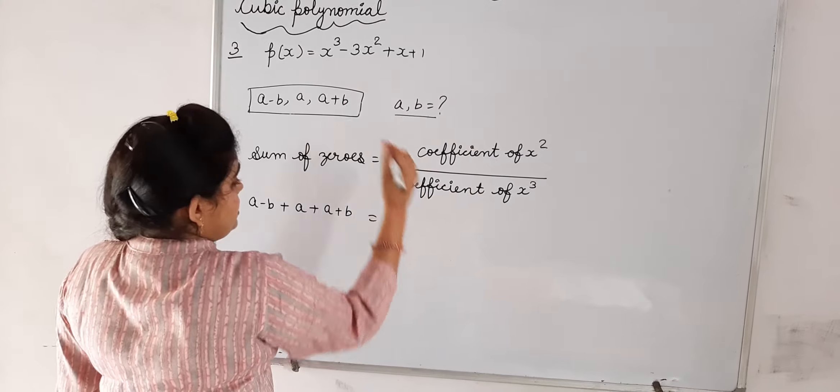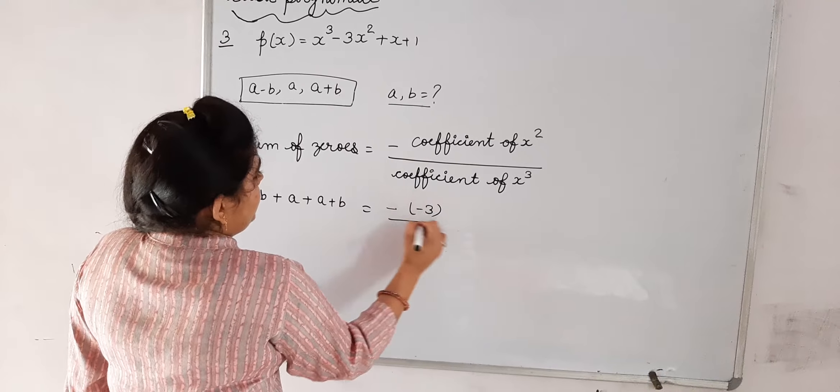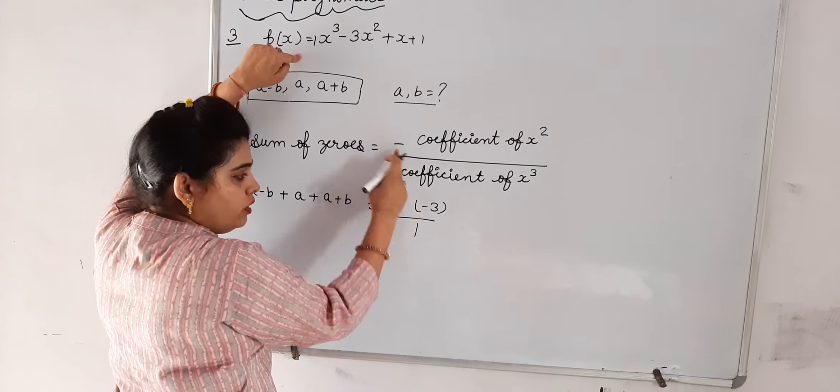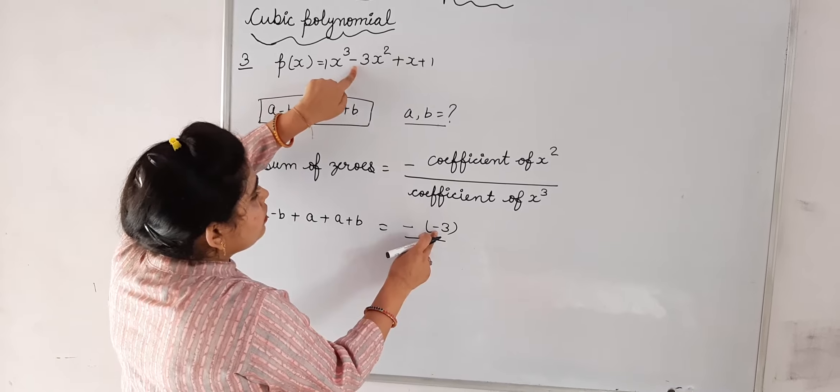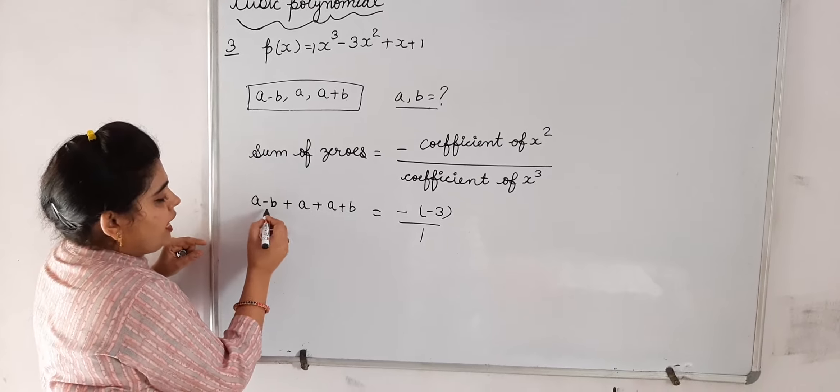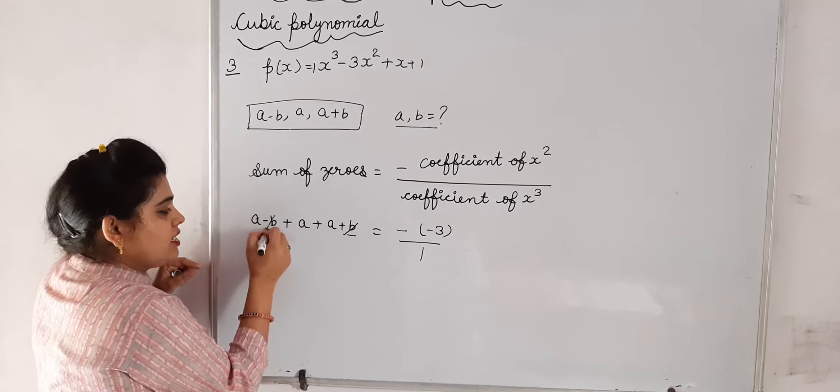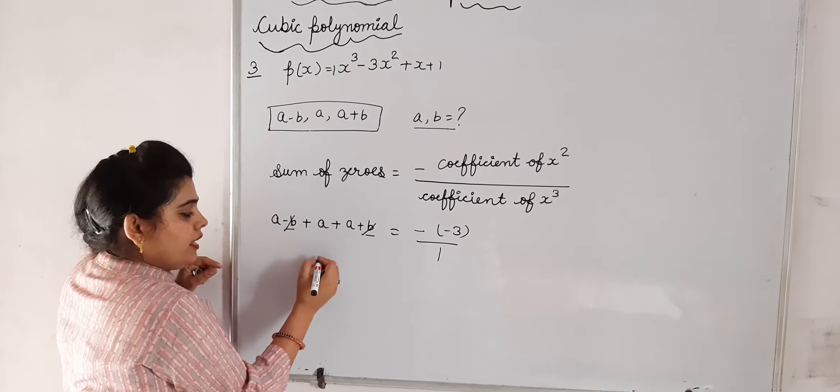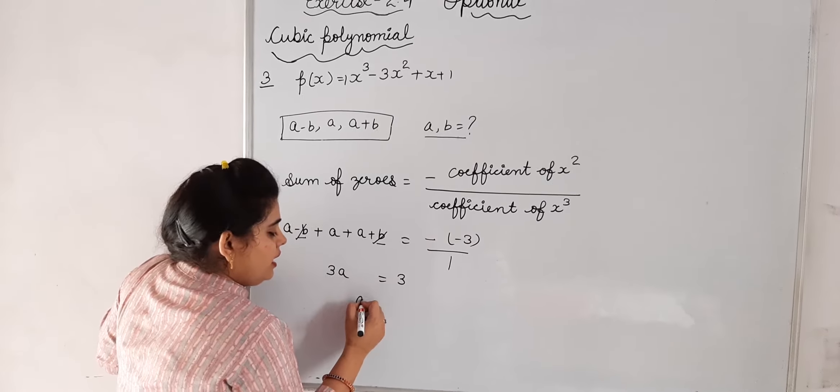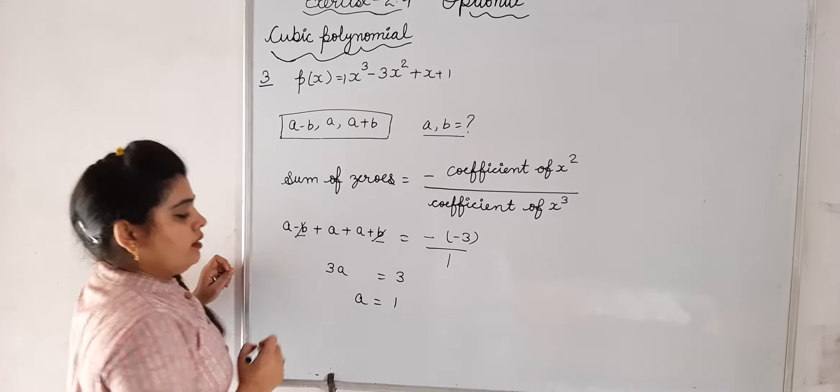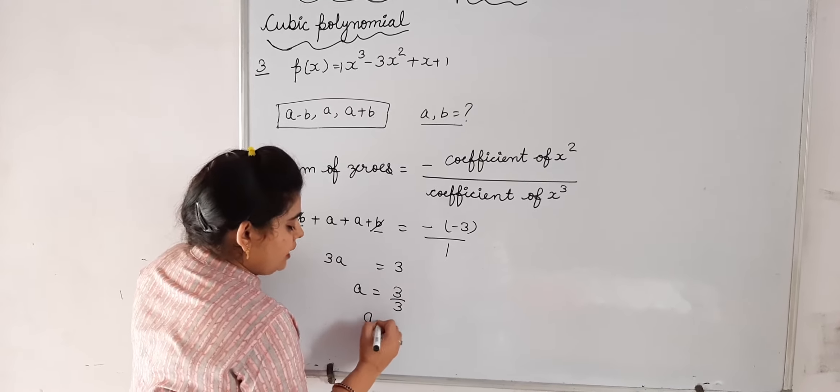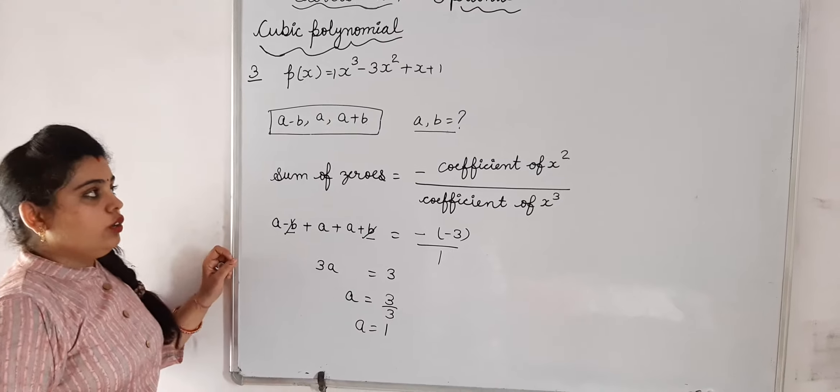the coefficient of x² is -3, and the coefficient of x³ is 1. The minus is in the formula. Then, on the left-hand side, -b and +b cancel each other. a + a + a gives 3a = 3. So, 3 divided by 3 gives us the value a = 1. Now,